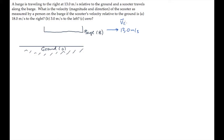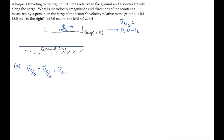Note the order of the subscripts: the velocity of barge relative to ground. The object being tracked is the scooter, which is moving on the barge. We're asked to find the velocity of the scooter relative to the barge. The first thing we need to do is write the proper relative velocity equation, and that's shown here. Carefully note the order of the subscripts.